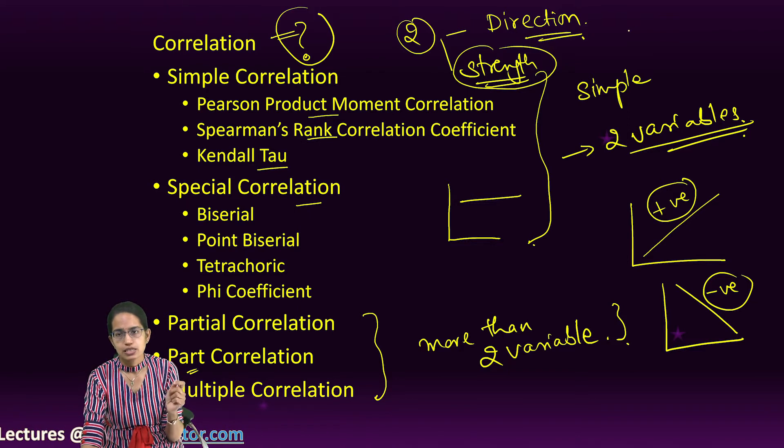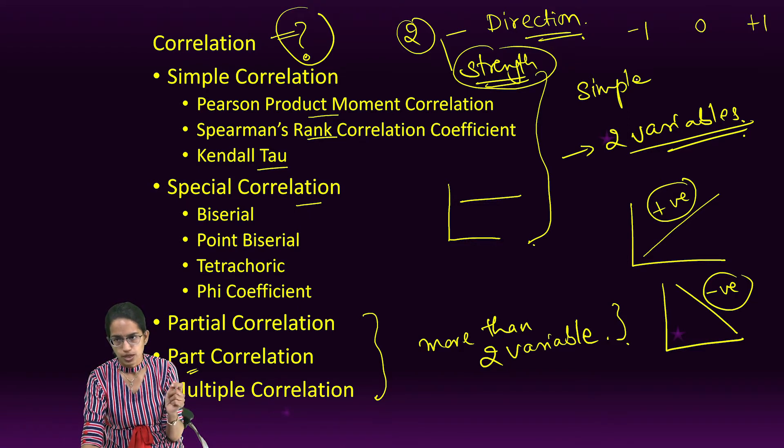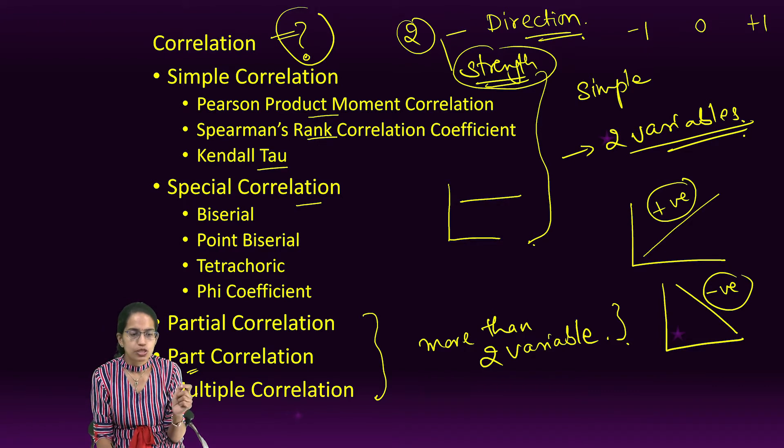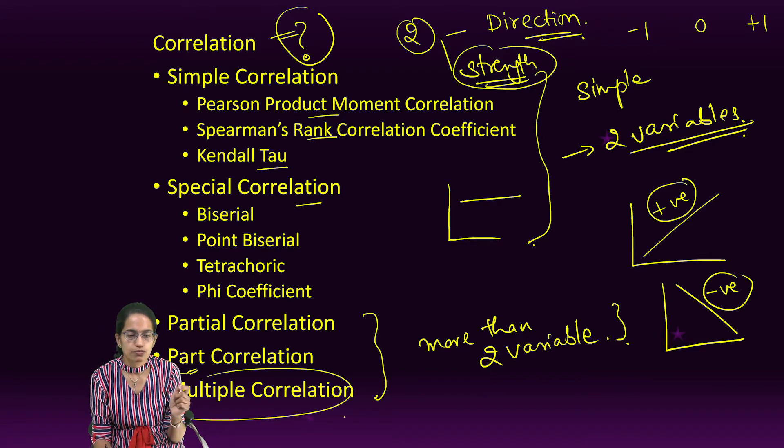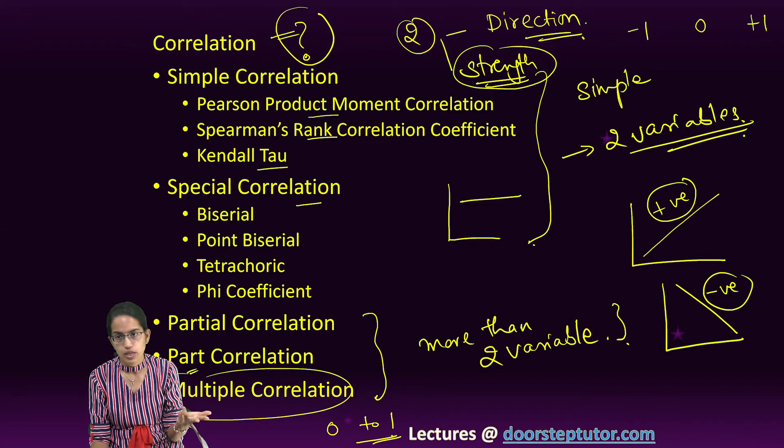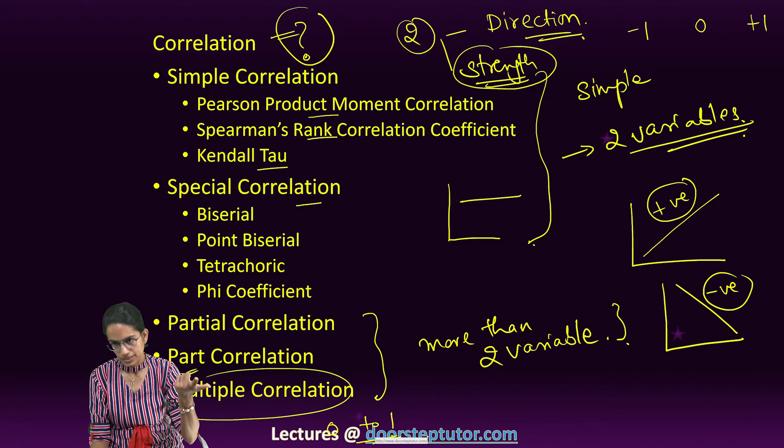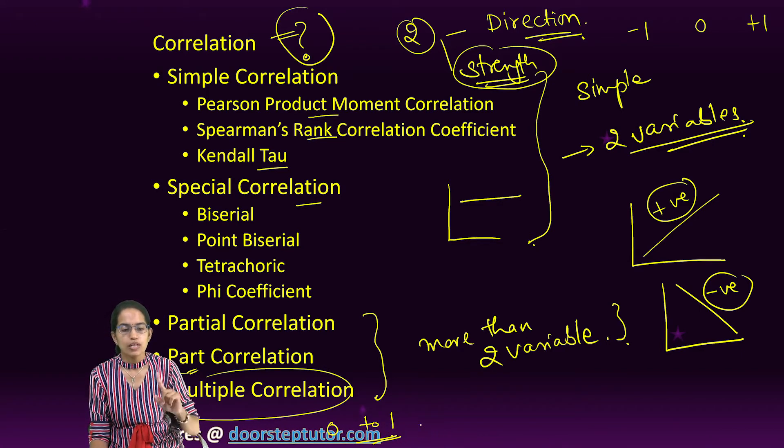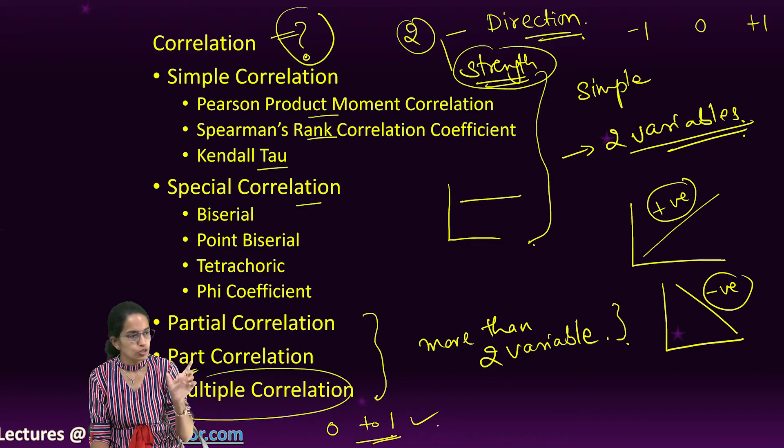Usually correlation is ranging from minus one to zero to plus one. Now an exception to this is multiple correlation, which varies from zero to one. The reason being we are squaring it, and therefore since we are squaring, minus one would also become plus.